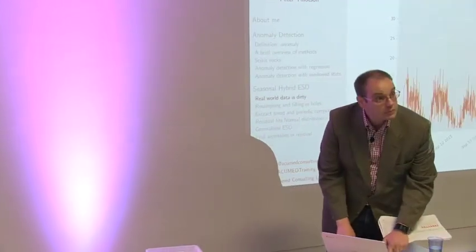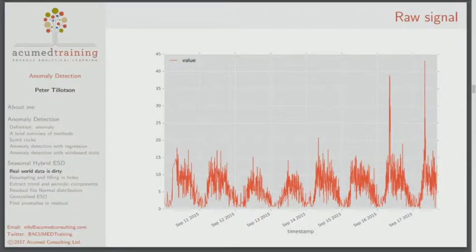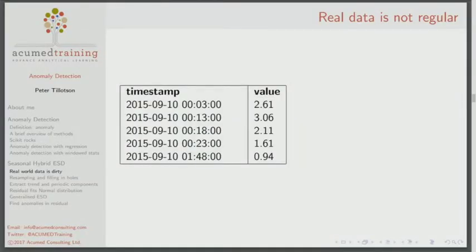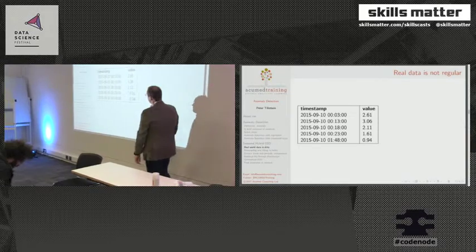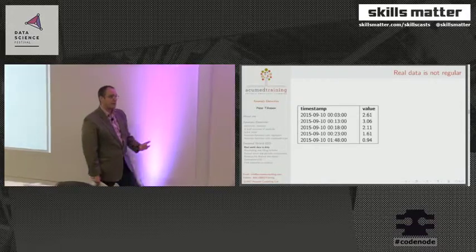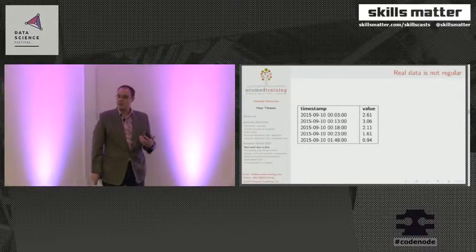Our data clearly has some periodicity and some spikes coming through. Typically our signals are in the 15 to 5 band with a few spiking up to 30, 35, 40. It's crappily sampled — the first sample is 10 minutes apart, followed by 5 minutes, 5 minutes, then 25 minutes. Often the first step is to get your data clean enough to work sensibly with algorithms.